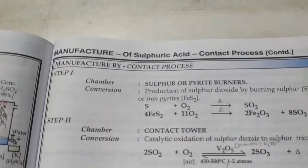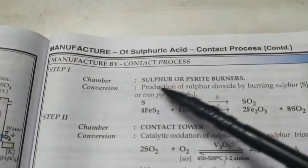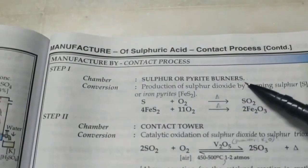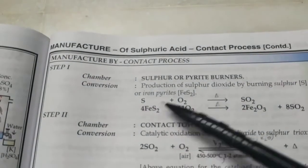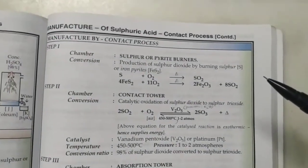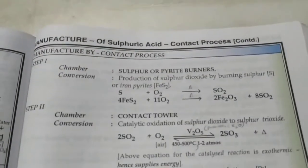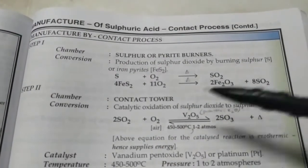The process is called contact process. Step 1: the chamber is the sulfur or pyrite burners. Here sulfur is burnt or iron pyrite is burnt to get sulfur dioxide. This sulfur dioxide is now converted into sulfur trioxide.